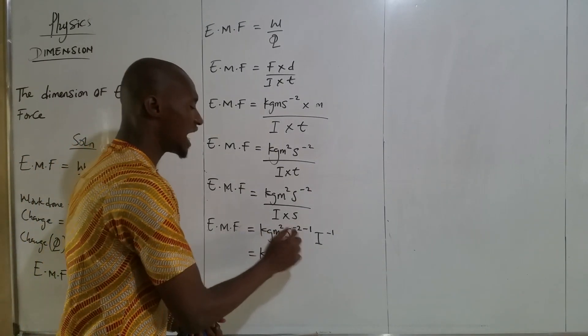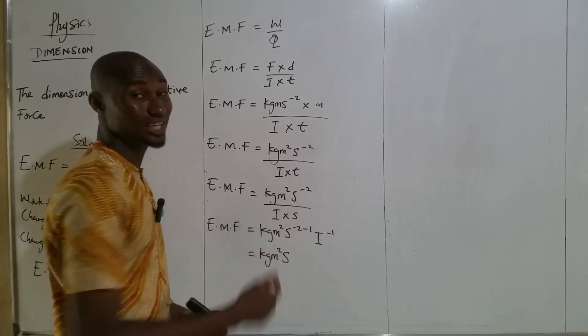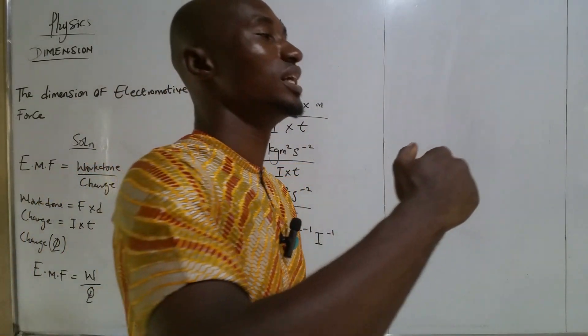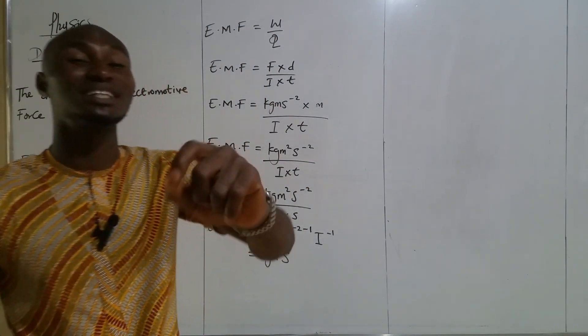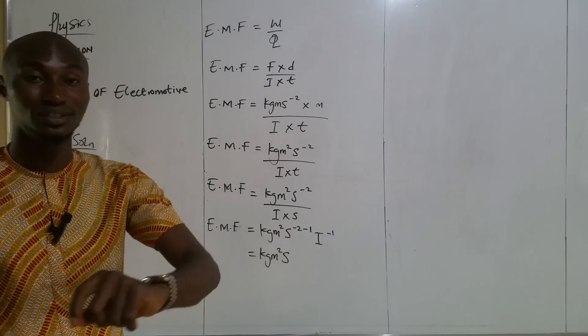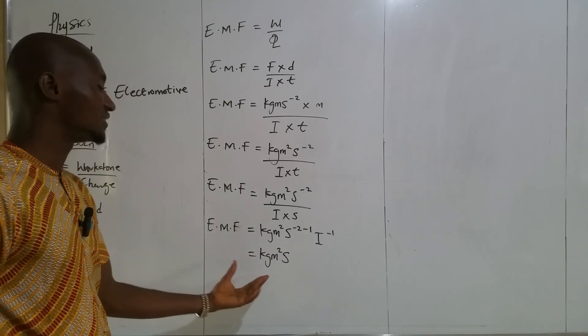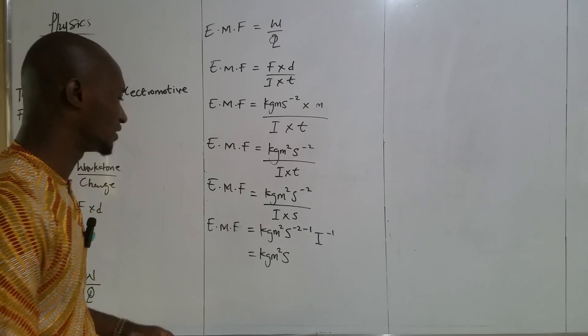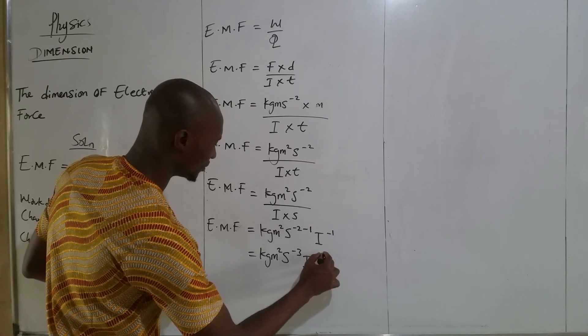But first of all, you'll be confused on how I converted this s to minus 1. Because of division law. That is why mathematics is very important in sciences. Before you go into physics calculations, you need to have in-depth understanding in mathematics. You need a balanced perspective in mathematics. Now, the division law here, I'm going to explain this thing. I will explain it later. So this is minus 3, then I⁻¹.